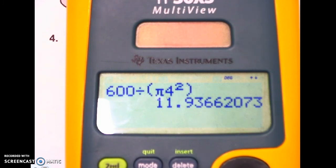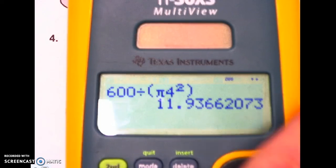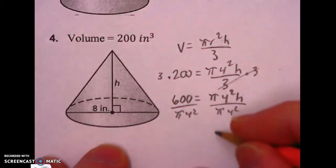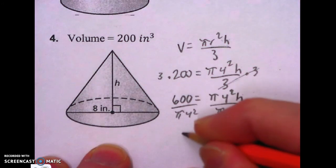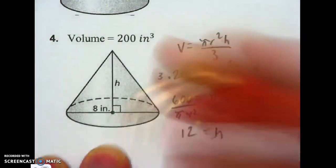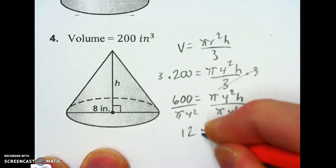11.9 and we need to round that to the nearest whole. So it's about 12. Our height is about 12. I need to make that a wiggly equals to show that it was rounded.